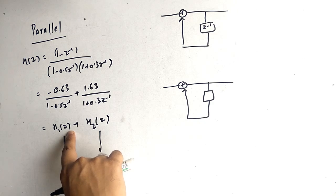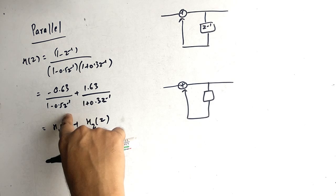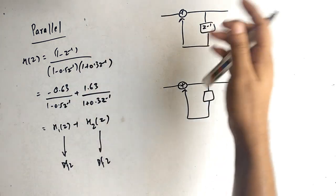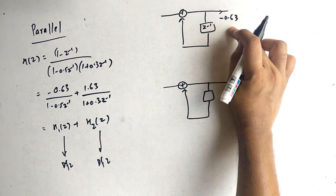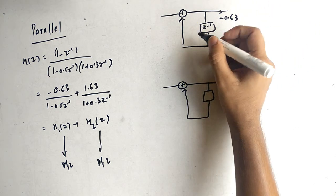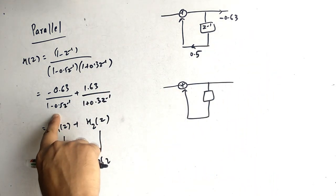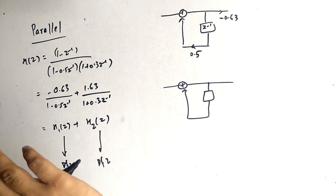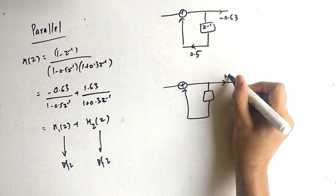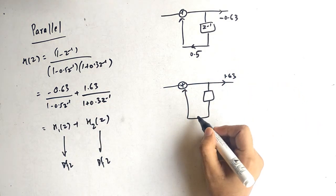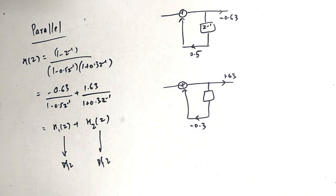For H1 of Z, the term is minus 0.63 upon (1 - 0.5 z⁻¹). The zero is minus 0.63 — for zeros the coefficient always remains as-is. For the pole, it will have the negative value, so we write 0.5. That completes H1 of Z. For H2 of Z, the zero value is 1.63, and the pole value is plus 0.3, so here we write minus 0.3. That completes H2 of Z.